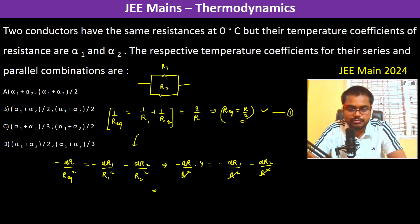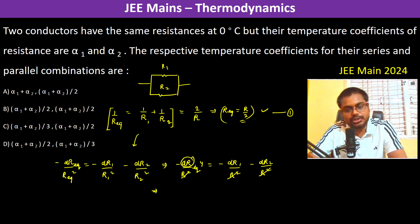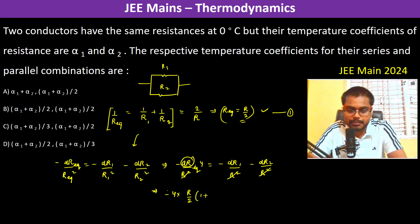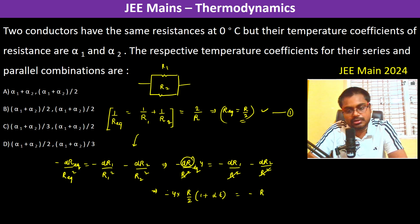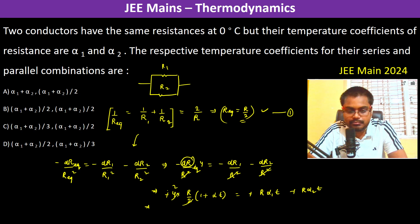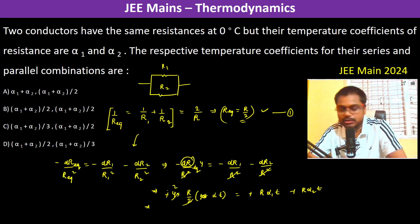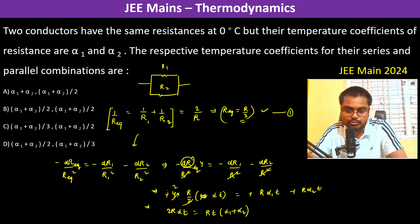Now substituting the values: dR_eq for the parallel case is (R/2)(1 + α_eq·t), dR1 = R·α1·t, and dR2 = R·α2·t. After cancelling R and t terms, we get 2R·α_eq·t = R·t·(α1 + α2). Therefore alpha_eq = (α1 + α2) / 2.